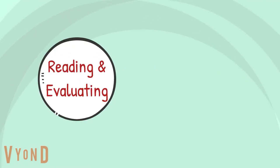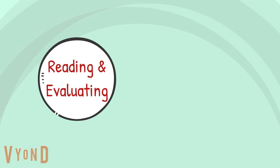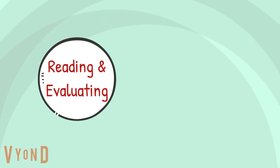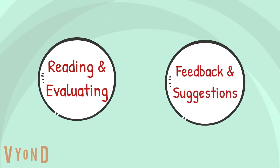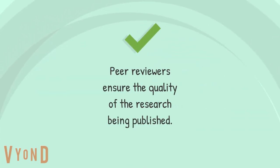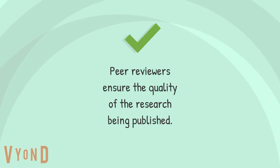First is the reading and evaluating of the work, to strengthen the paper and check that no mistakes have been made and that there aren't any potential problems in the research. The second is the feedback, offering suggestions for how the paper can be improved. Peer reviewers ensure the quality of the research being published, benefiting the greater scientific community and all those who depend on it.